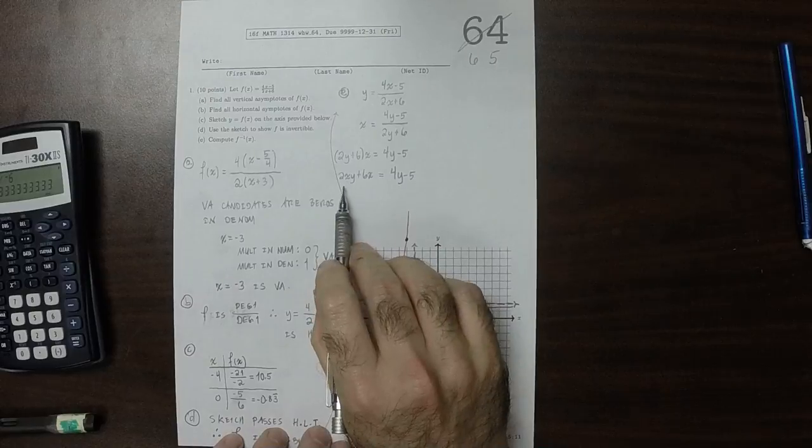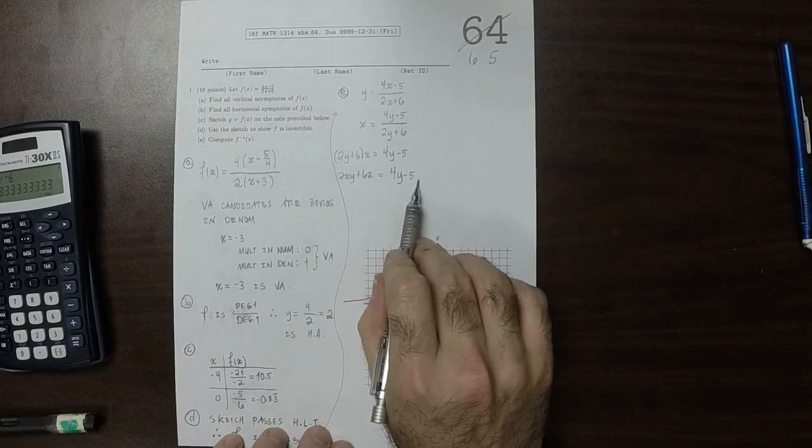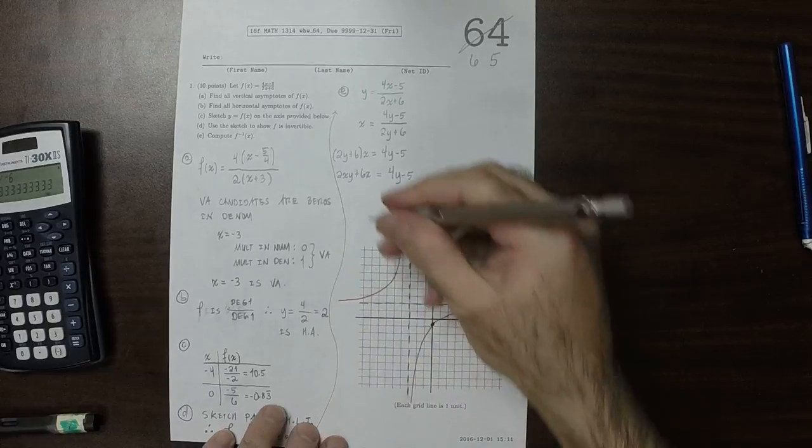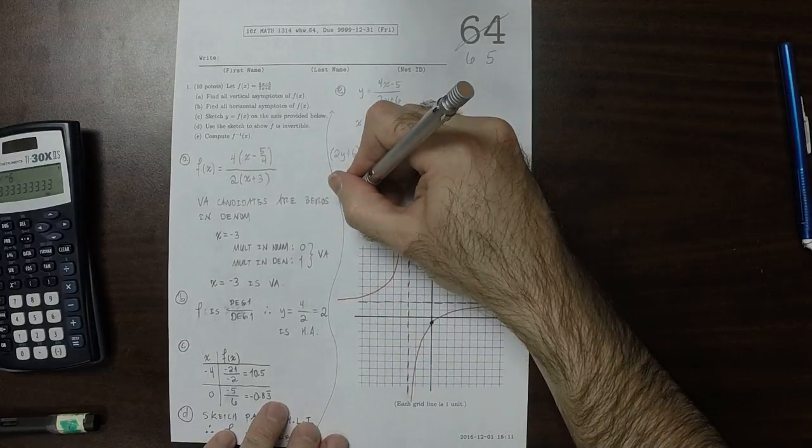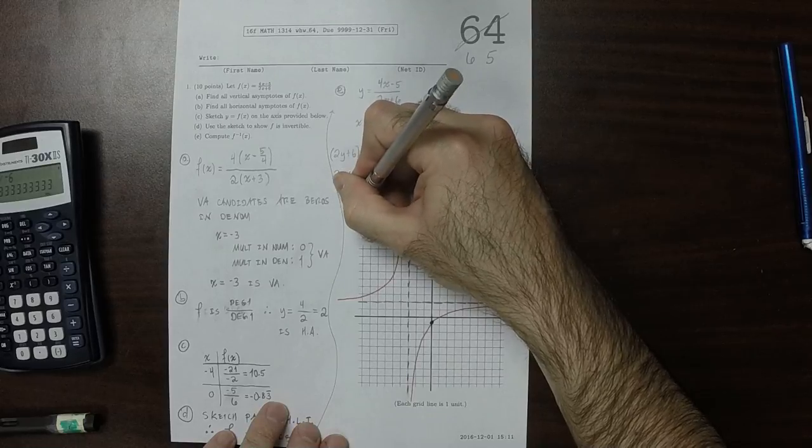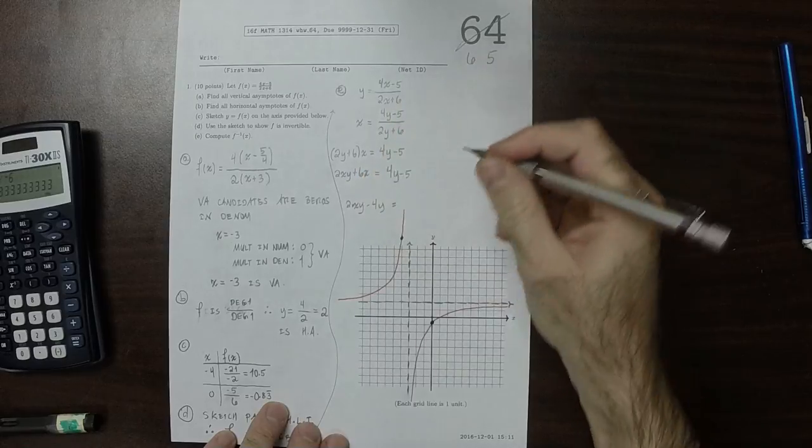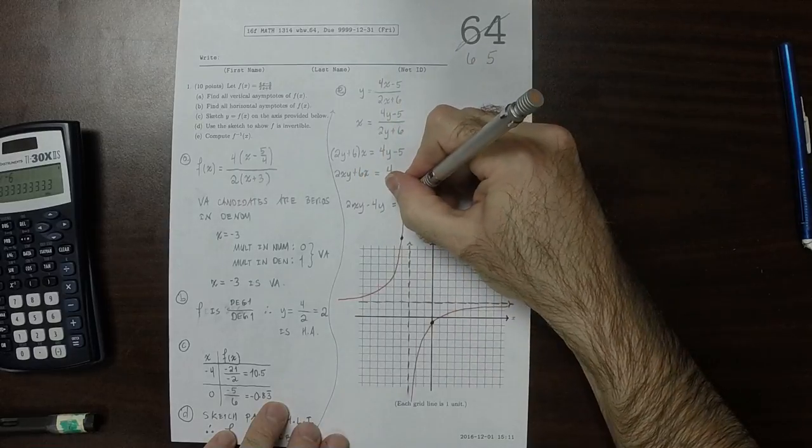So now there's four terms in this equation: 1, 2, 3, 4. Some of them have a y and some do not. So I'm going to collect all the y's together. So 2xy minus 4y, and then get all the things without y together.